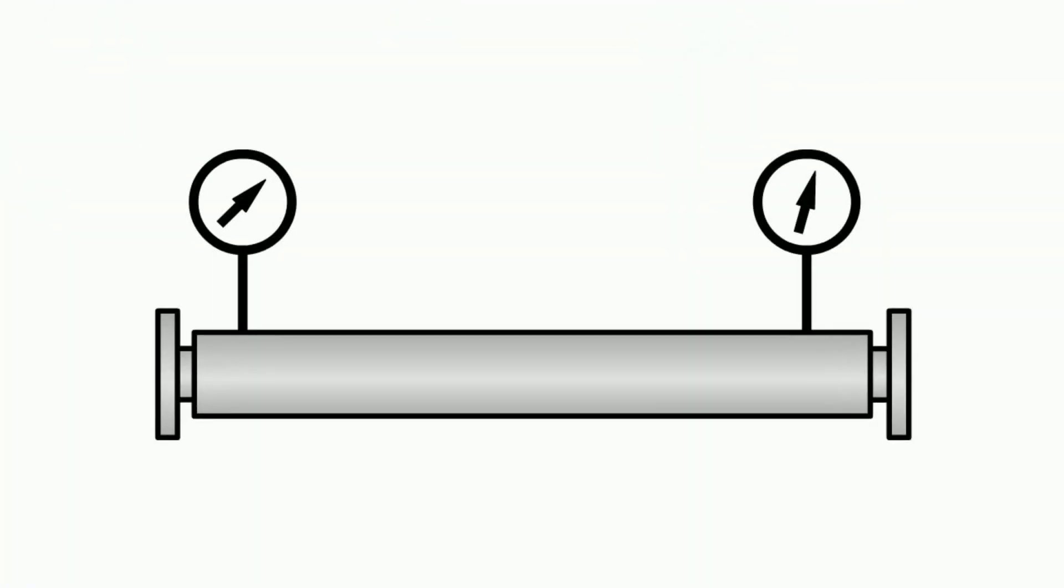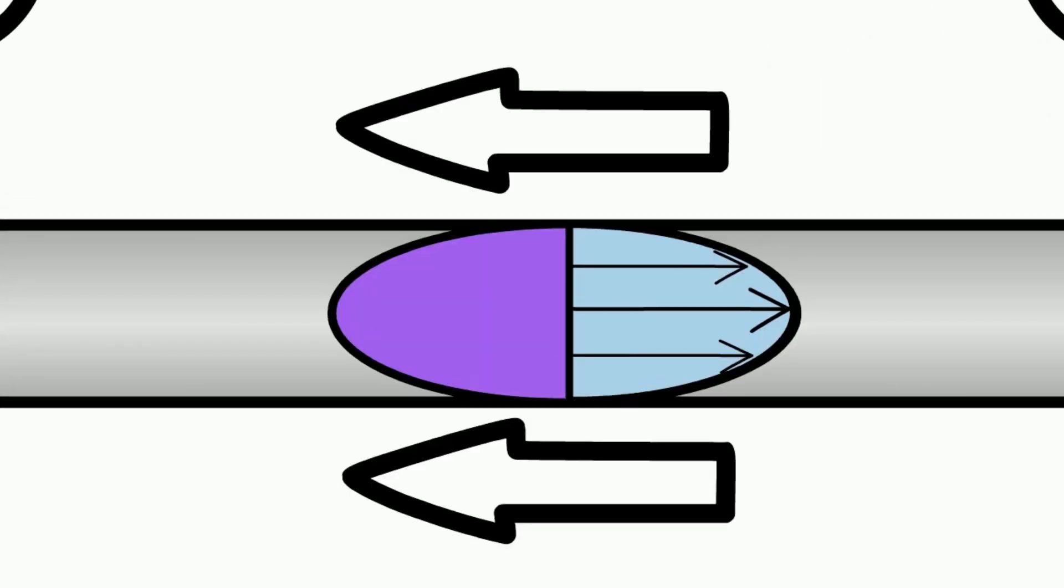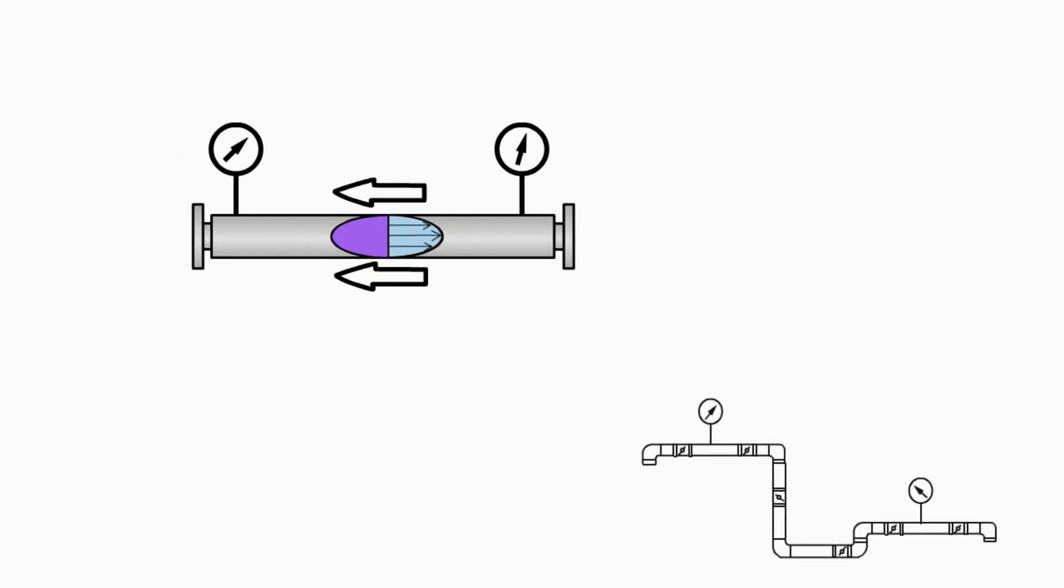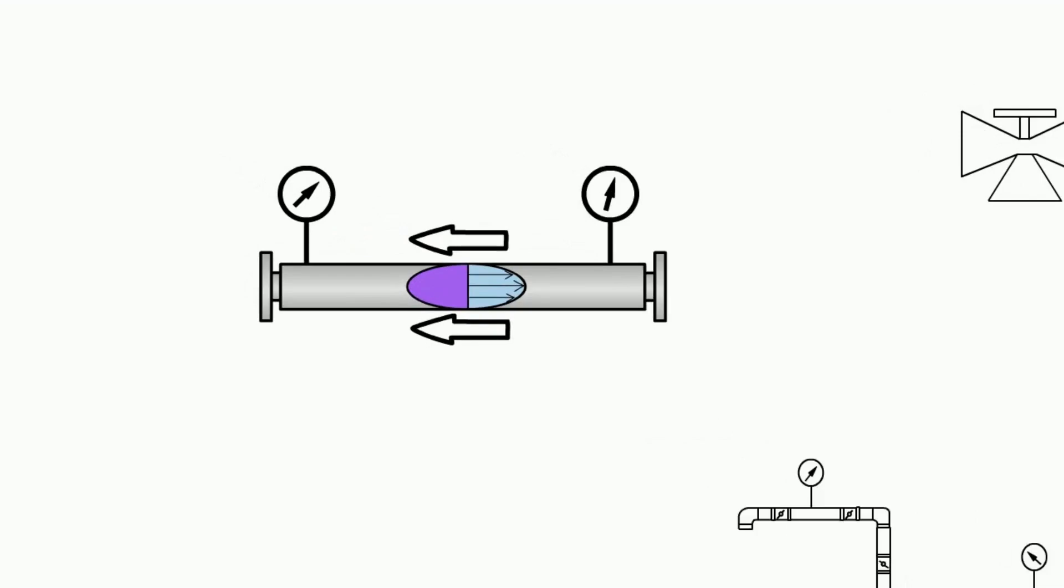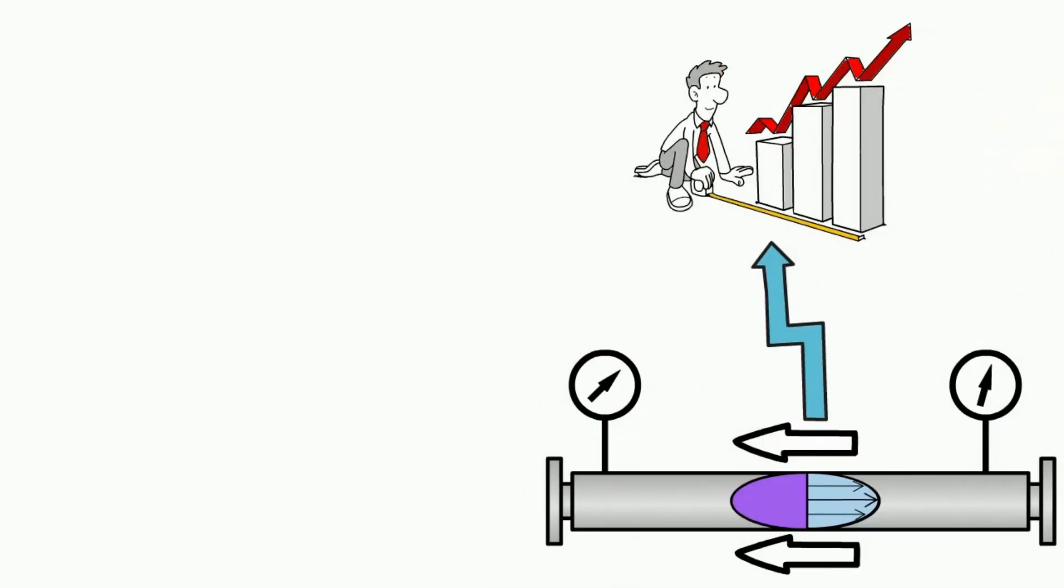Now, when a fluid flows through a pipe, it experiences resistance due to the walls of the pipe and other factors like changes in direction or flow rate. This resistance causes the pressure of the fluid to drop as it moves through the pipe. This drop in pressure is what we call frictional head loss.